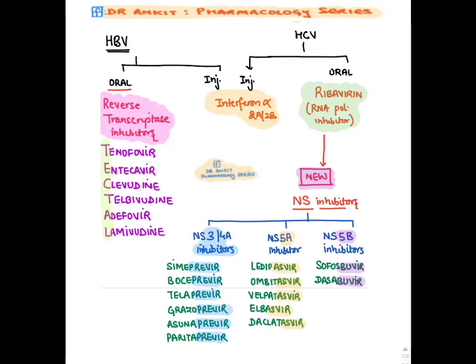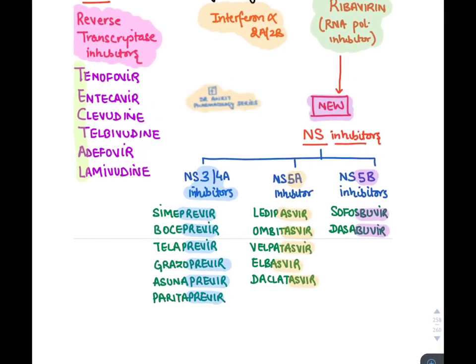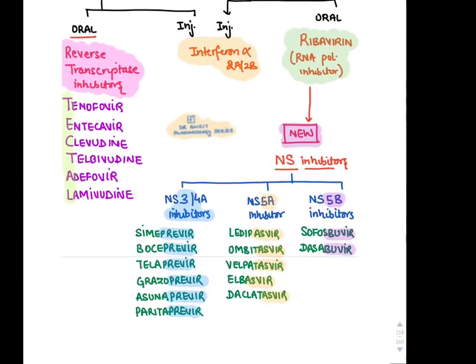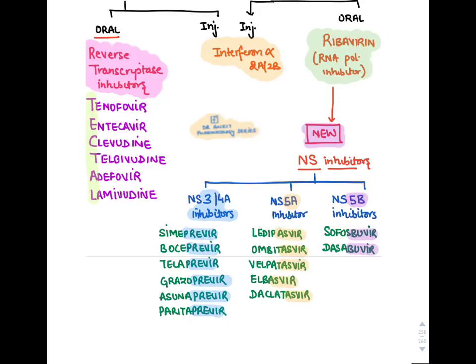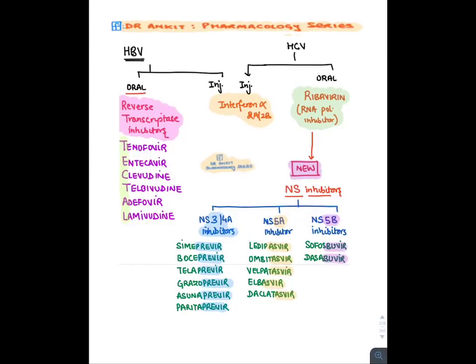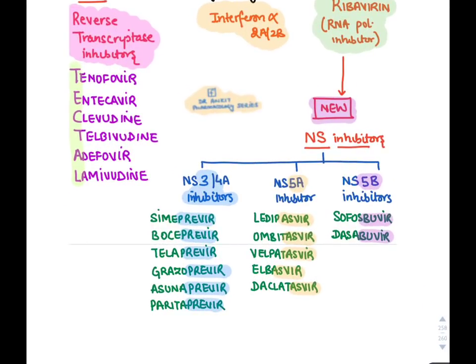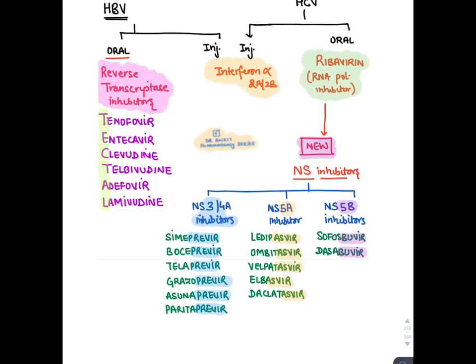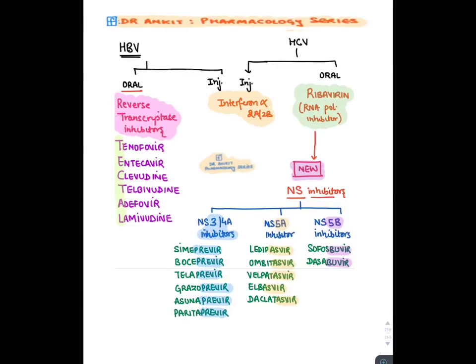Common injectable drug for both HBV and HCV: Interferon alpha-2a and 2b. Oral drugs for HBV are reverse transcriptase inhibitors — mnemonic TECTAL: Tenofovir, Entecavir, Clavudine, Telbivudine, Adefovir, Lamivudine; best is Tenofovir then Entecavir. For HCV: Ribavirin (RNA polymerase inhibitor) plus newer NS inhibitors. NS3/4A inhibitors (proteases) end in '-previr': Simeprevir, Boceprevir, Telaprevir, Grazoprevir, Asunaprevir, Paritaprevir. NS5A inhibitors (replication complex) end in '-asvir': Ledipasvir, Ombitasvir, Velpatasvir, Elbasvir, Daclatasvir. NS5B inhibitors (RNA polymerase): Sofosbuvir and Dasabuvir.